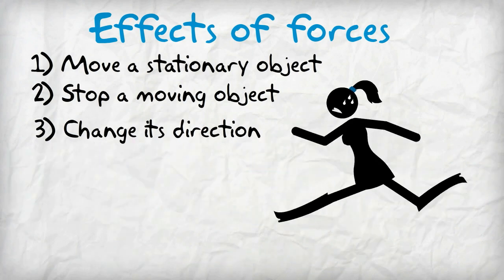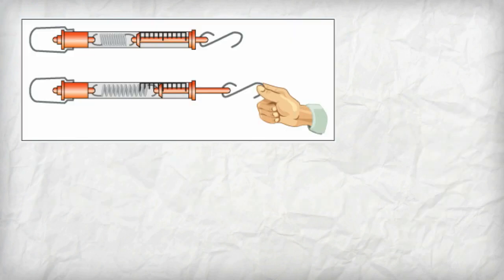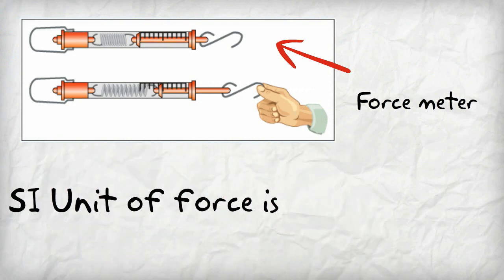A force can change the speed of an object. It can also change the shape of an object. A force is measured using a force meter. The SI unit of force is Newton.